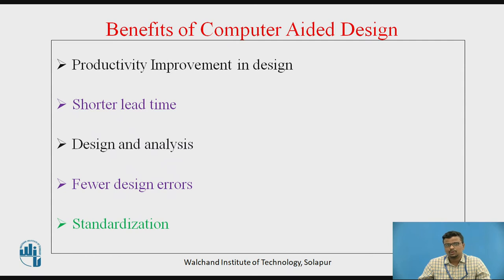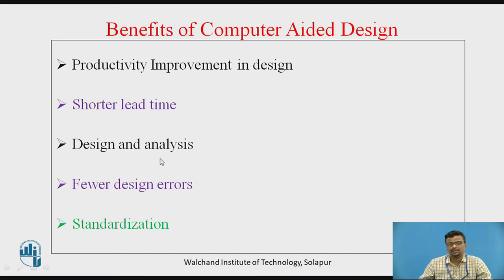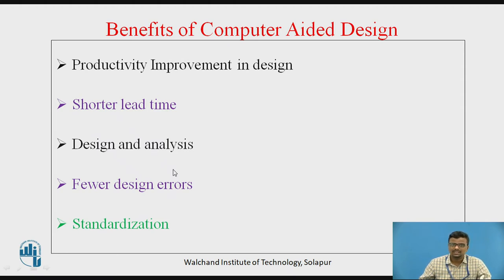There will be productivity improvement in the design, and there will not be any wastage of time between 3D modeling, meshing, and engineering analysis. There is also the use of computer-aided design and computer-aided engineering for design and analysis respectively. Whenever there is manual work, there will be mistakes or errors. But in case of computer-aided design, with the assistance of computers and softwares, there will not be any errors during the design process.